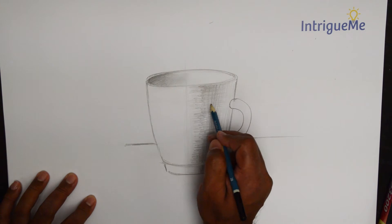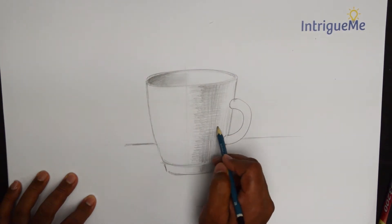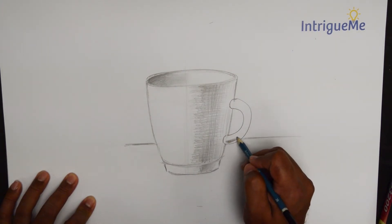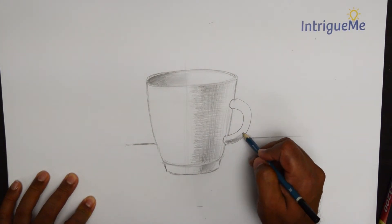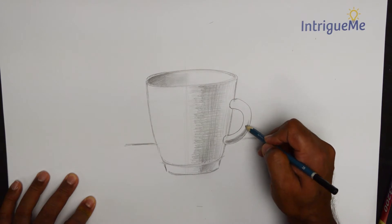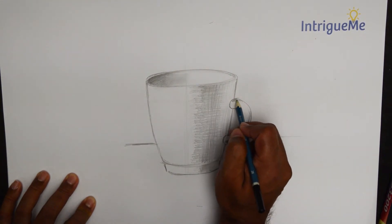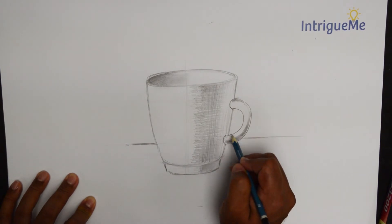And then just go in a little darker on this area. Go in a little darker around here. A little darker around here. Around there.